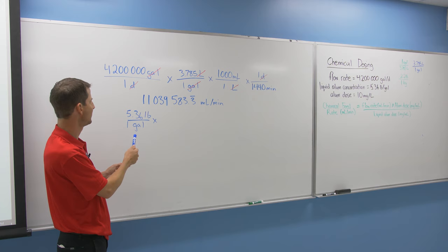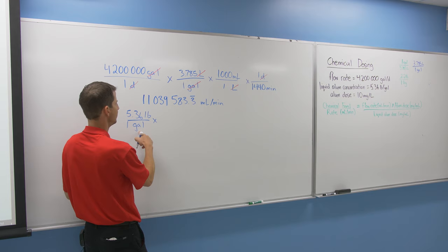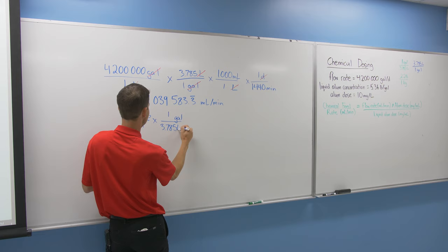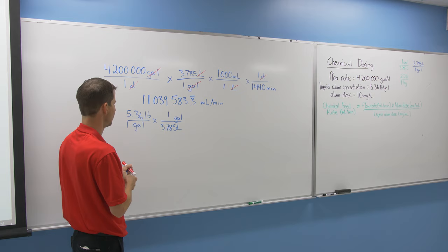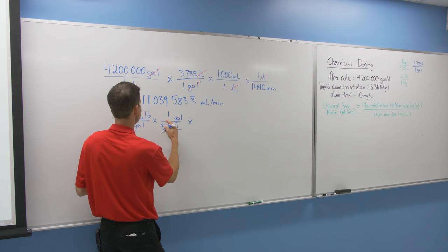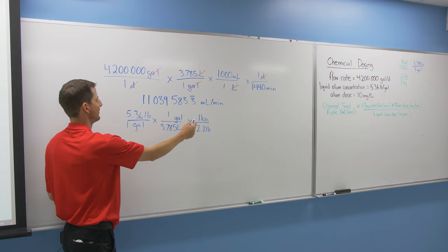Next, we're looking at the liquid alum concentration, given at 5.36 pounds per gallon, and we'll use our conversion factors again. Gallons are on the bottom, so the gallon needs to be on top. One gallon is 3.785 liters. That takes care of our gallons. Now let's convert pounds to kilograms—let's get those imperial units out of the way. Pounds are on top, so pounds go on the bottom: 2.2 pounds in one kilogram. Now we've got kilograms per liter.